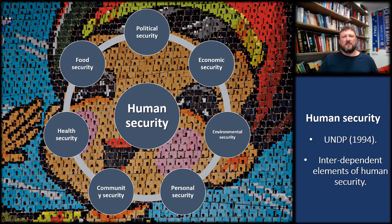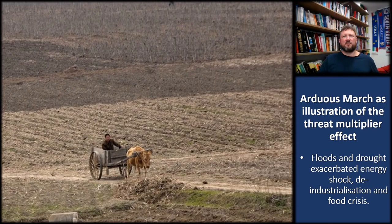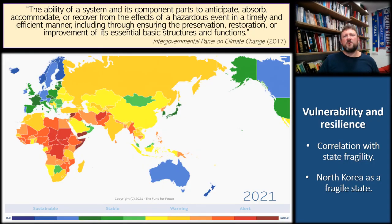According to this framework, there are seven different elements of human security, which are all interrelated with each other. The key insight is that each of these elements is interdependent with the others and shapes each other dynamically. If you have environmental insecurities, it creates insecurities across all of the other dimensions of human security. And if there are insecurities in those other dimensions, that can also create environmental vulnerabilities. We see this playing out very clearly in the North Korean case. Environmental disasters were a factor in the near collapse of the DPRK state during the Arduous March, because successive years of floods followed by drought compounded the energy shock that was crippling the food system and the economy.